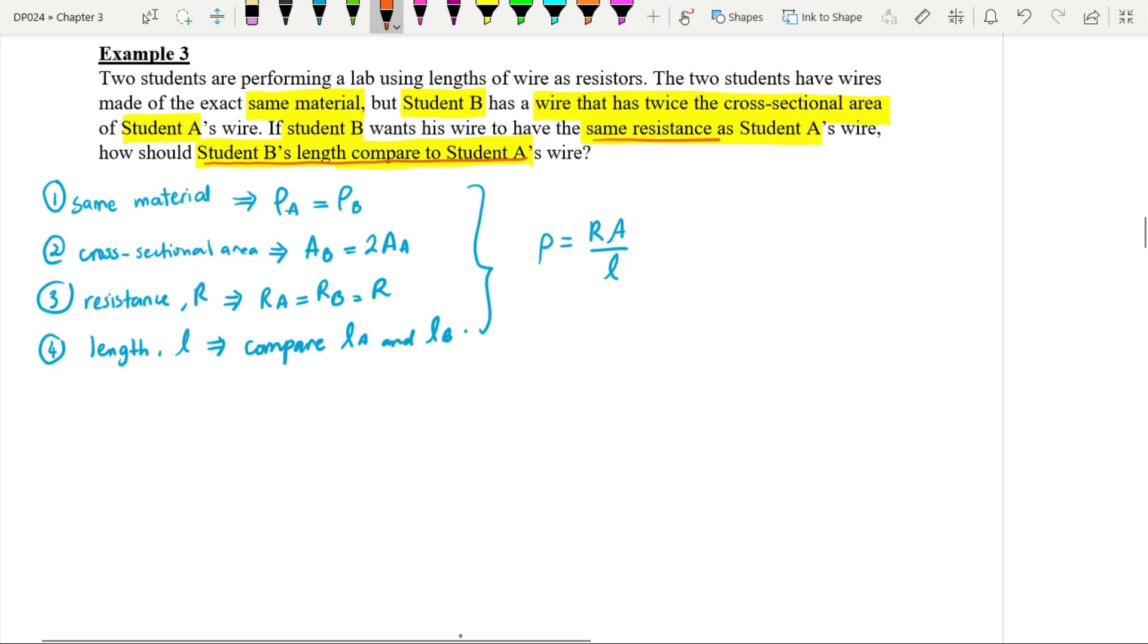Now, we use this ρ=RA/L formula, and we insert all information that we extracted. So first thing first, we need to differentiate resistivity for student A. Basically, we will use all symbols in this formula for student A. Resistance A, sorry, area first right? Cross-sectional area A, and length A.